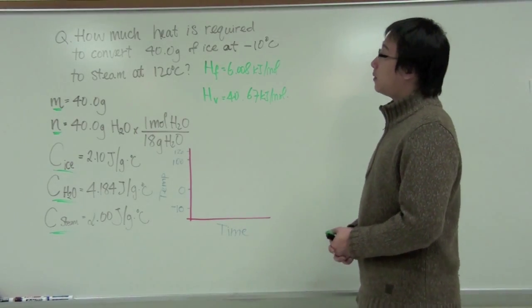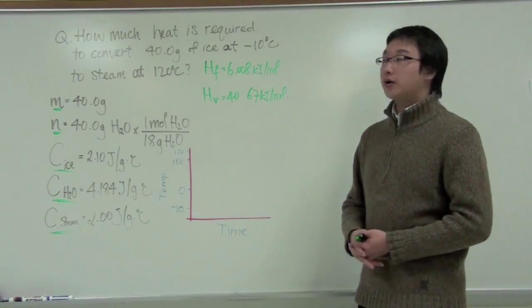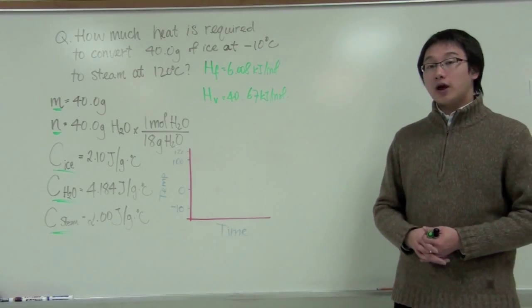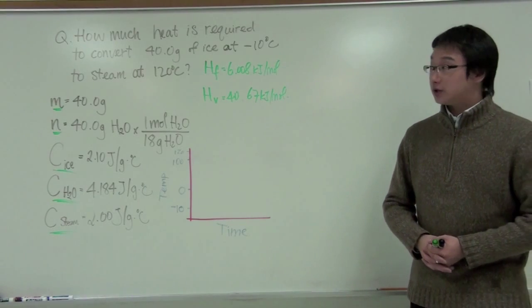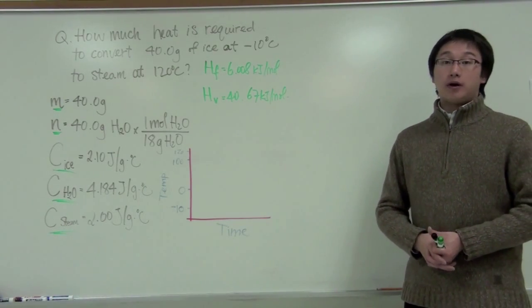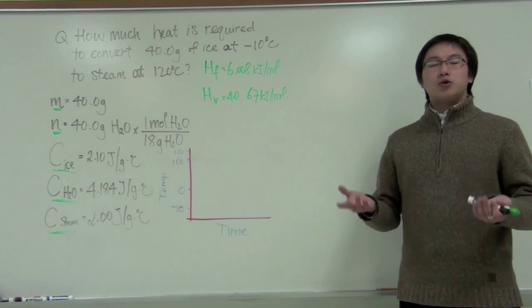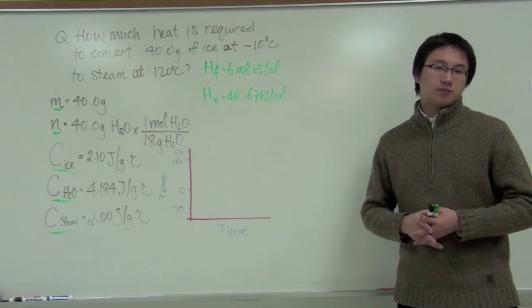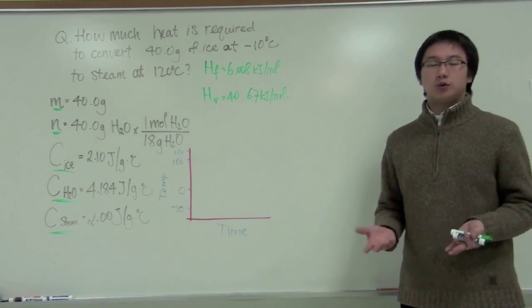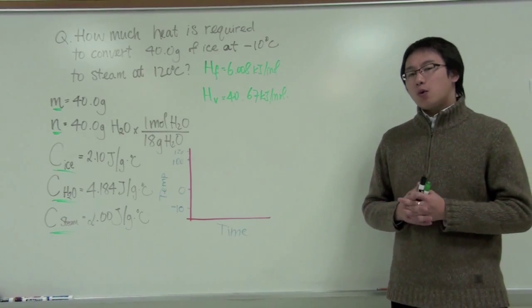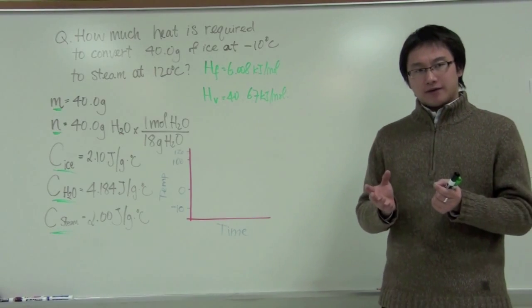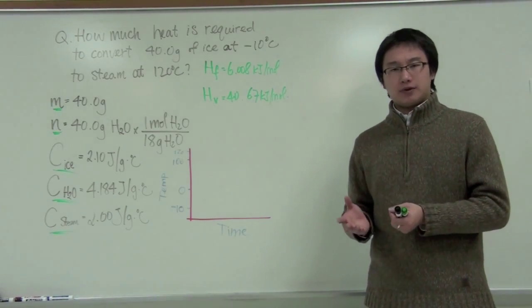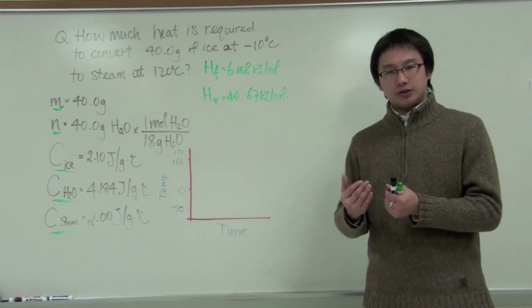The question says how much heat is required to convert 40 grams of ice at negative 10 degrees Celsius to steam at 120 degrees Celsius. So when you read the question you may first be puzzled like what do we do now? What I want you to do is at the very beginning think about what you have and what you need to end up with and then think about the transition in between.